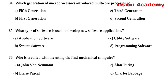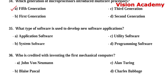Question number 34: Which generation of microprocessors introduced multi-core processors? Option A: fifth generation. Option B: first generation. Option C: third generation. Option D: second generation. The right answer is Option A, fifth generation.